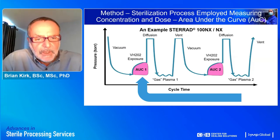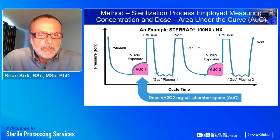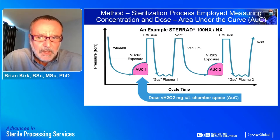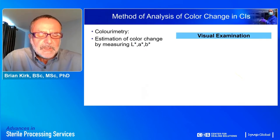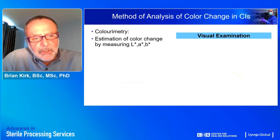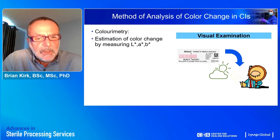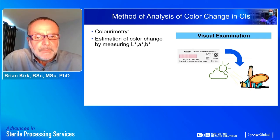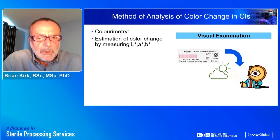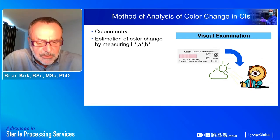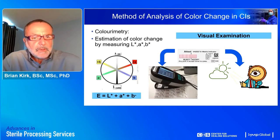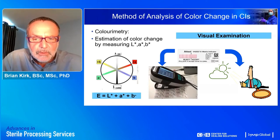The sterilization cycle was either an express or standard cycle. The color change on the CIs was analyzed by two methods: first, by visual examination according to the manufacturer's instructions — each chemical indicator was examined in good light conditions by a single observer, and color change results were interpreted according to the manufacturer's instructions.